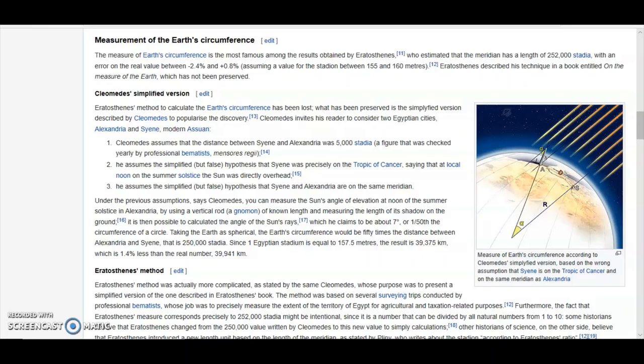And look at the diagram on the right. Underneath the caption reads, measure of earth's circumference according to Cleomedes simplified version, based on the wrong assumption that Syene is on the Tropic of Cancer and on the same meridian as Alexandria. Am I reading Martian or is it English? It's crystal clear that Eratosthenes is bollocks.